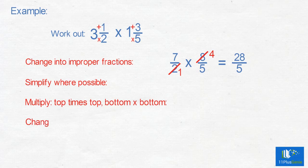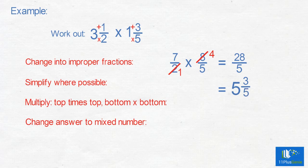Change your answer into a mixed number. 5 into 28 gives 5 with a remainder of 3. The answer is 5 and 3/5.